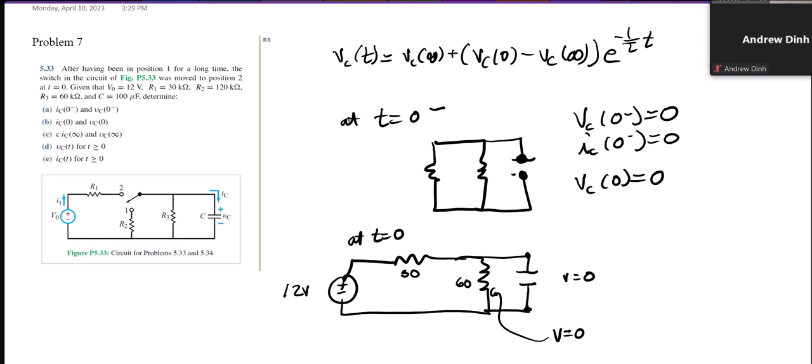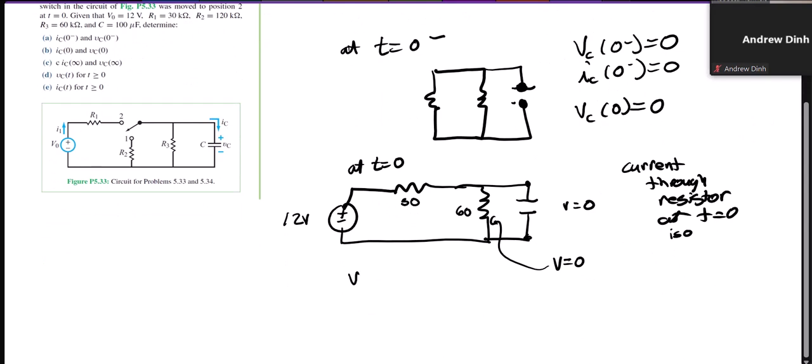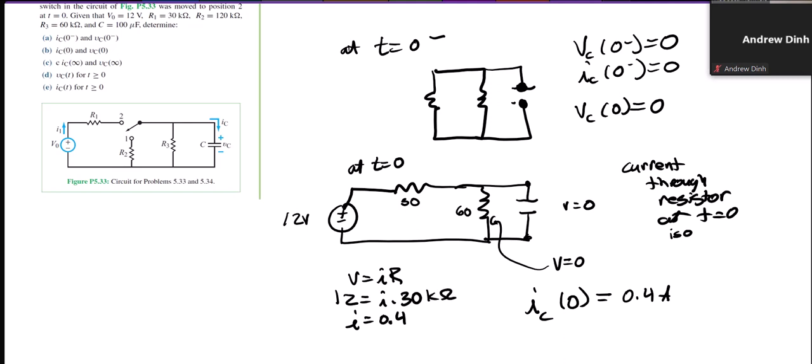So for a resistor, for a resistor which does follow Ohm's law, V equals IR, if the voltage is 0, the current is 0. So for this resistor, there's no current through this resistor. So the current through the resistor at T equals 0, and at T equals 0 only, is 0. That means all of the current is going through the capacitor. So I can look at the other resistor to get the value of my current. So I can say V equals IR, 12 equals I times 30, or I equals 0.4. So IC of 0 equals 0.4 amps. It's supposed to be milliamps because this is 30 kiloohms. So this is 0.4 milliamps.